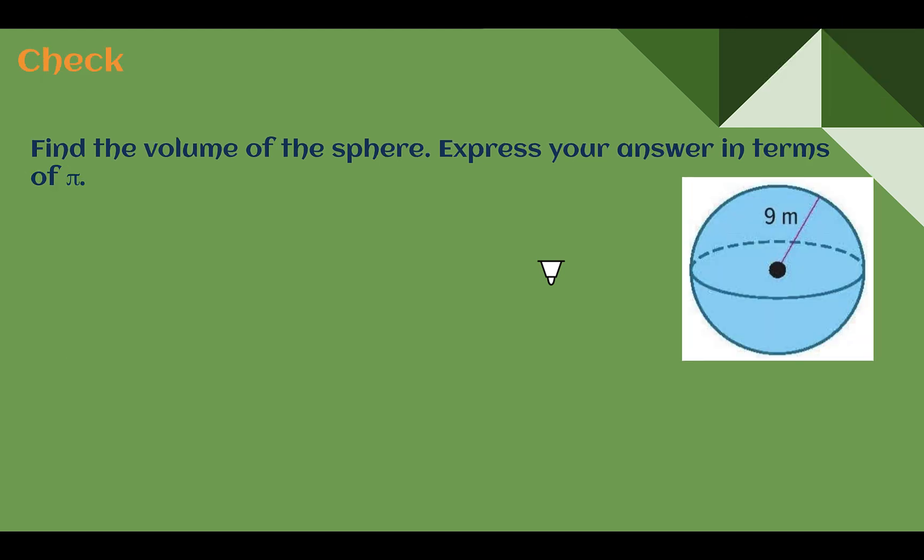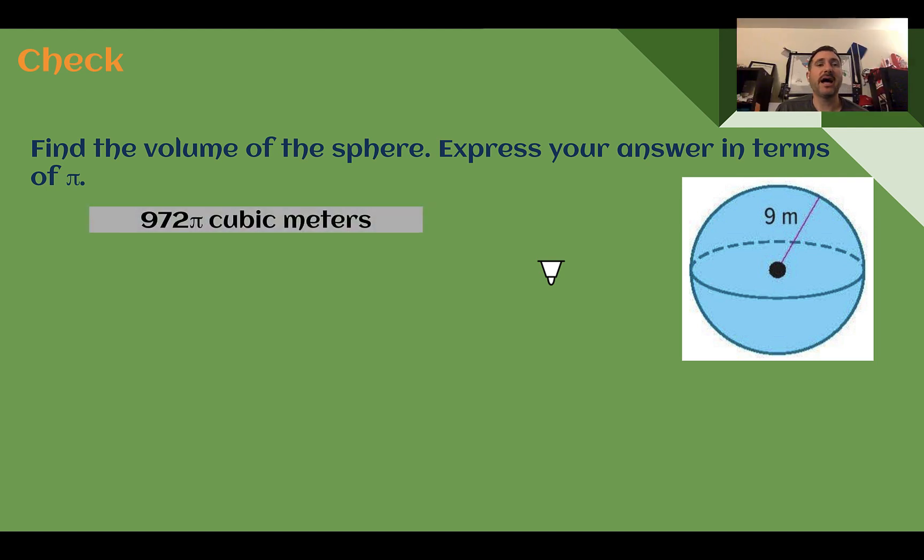Check your understanding. Find the volume of this sphere. Pause the video now and complete the check. Check your answer. You should have said 972 pi cubic meters.